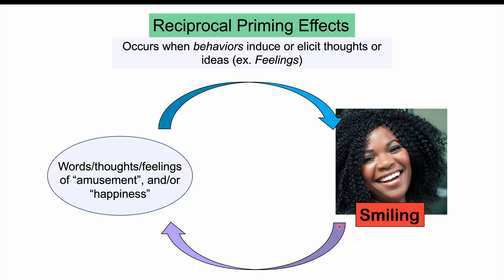This also occurs with frowning. If you put something in somebody's mouth to make them frown, they will actually feel sadder than they would otherwise. Studies have shown that if someone voluntarily smiles — or has something in their mouth requiring a smile shape — while watching something generally amusing or funny, they find it even more amusing. Conversely, if that person is made to frown while watching the same amusing video, they find it less amusing. There is a very important connection between not only your thoughts and feelings and the way you behave, but the way you behave and your thoughts and feelings. That is reciprocal priming effects.